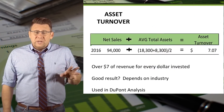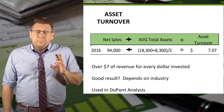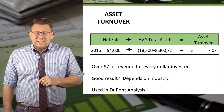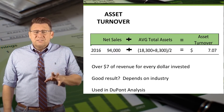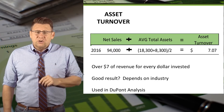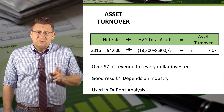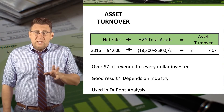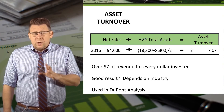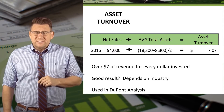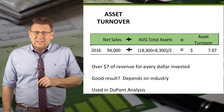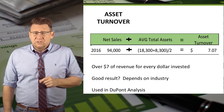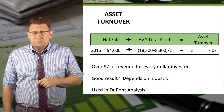So for 2016, net sales divided by average total assets gives us an asset turnover of 7.07. This means that for every $1 invested in assets, the company is generating over $7 of sales revenue.